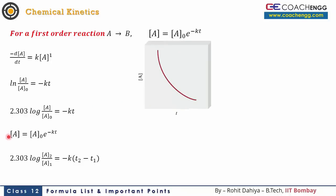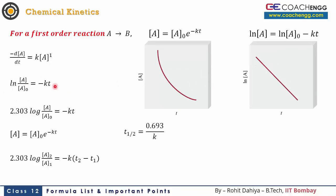Looking at the graph: concentration of A depends exponentially on time — there is an exponential decay. If we take the natural log of both sides, the graph becomes a straight line. The equation becomes: ln A = ln A₀ − kt. So for a graph of ln A vs. T, the slope equals −k. If using log base 10, a factor of 2.303 must be included in the equation.